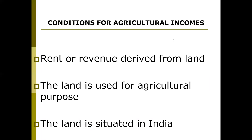On agricultural income, there is no income tax in our country because the item falls in the state list. States have the power to impose tax on agricultural income by way of land revenue. Apart from that, if a person has to get exemption on agricultural income, three conditions have to be fulfilled: the land has to be situated in India; rent or revenue should have been derived from that land; and the land should have been used for agricultural purpose, not for other purpose.